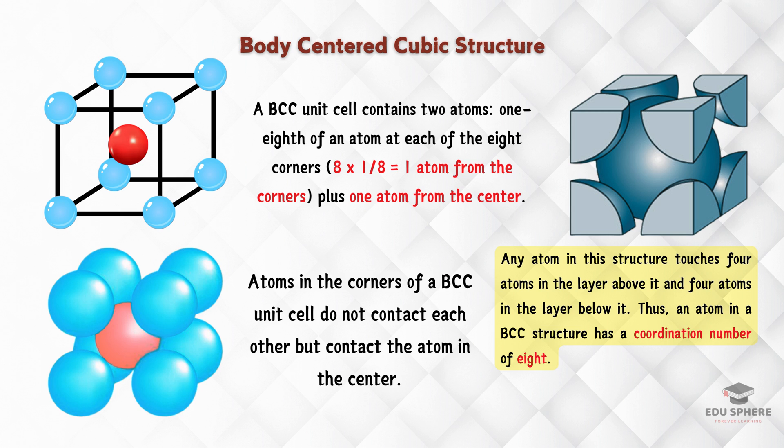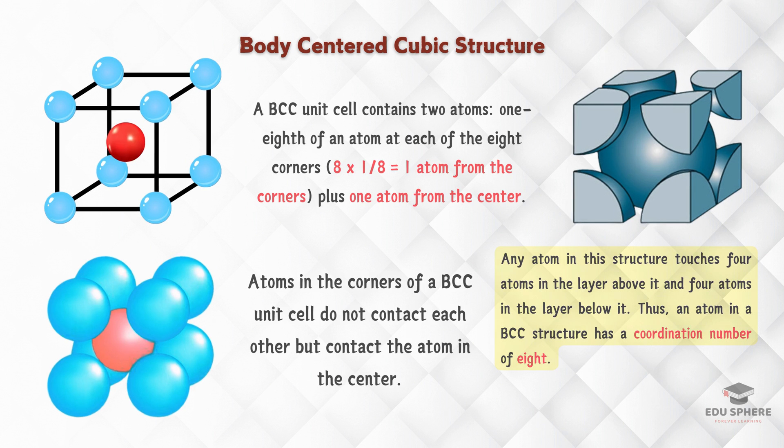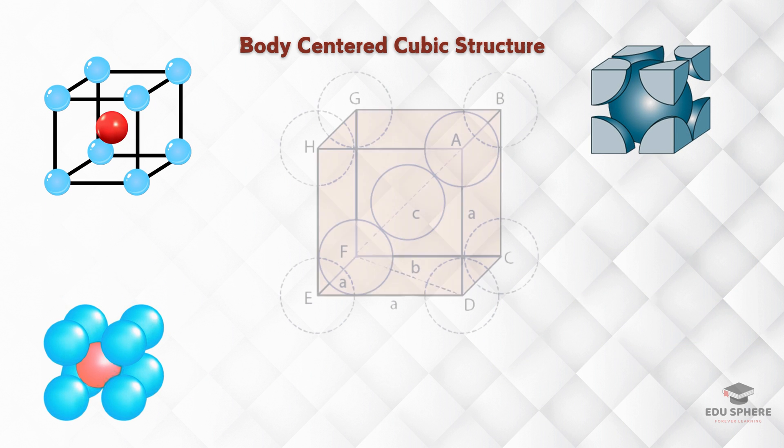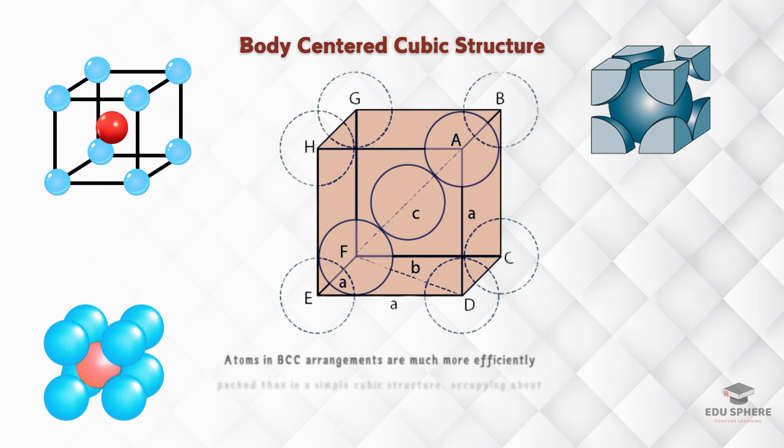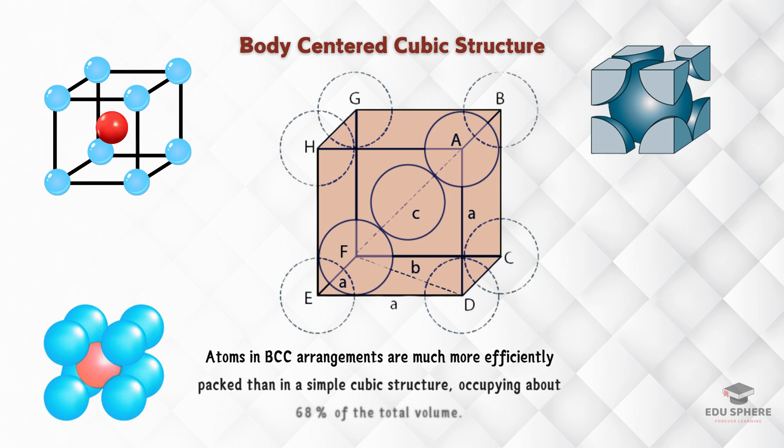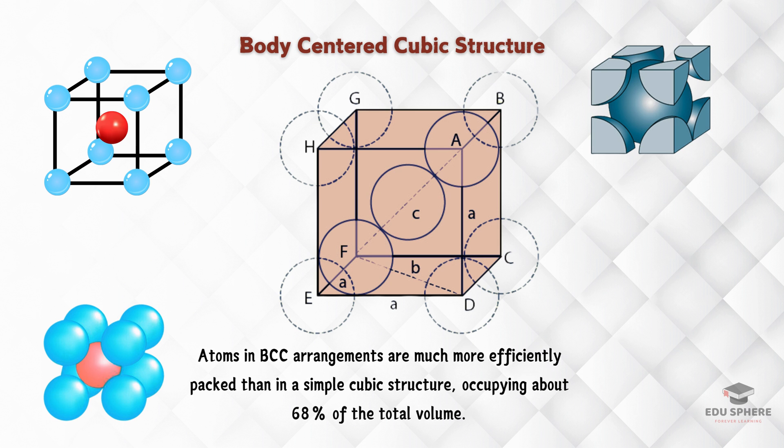So, each atom in a body-centered cubic structure has more neighbors. In fact, an atom in BCC touches four neighbors above it and four neighbors below it, for a total coordination number of eight. By adding that center sphere, BCC packing becomes way more efficient. In fact, BCC atoms fill up about 68% of the space, compared to only 52% for simple cubic.